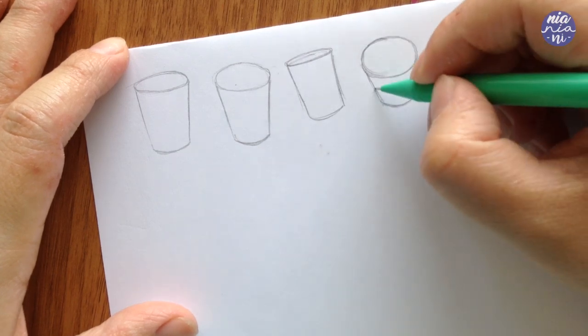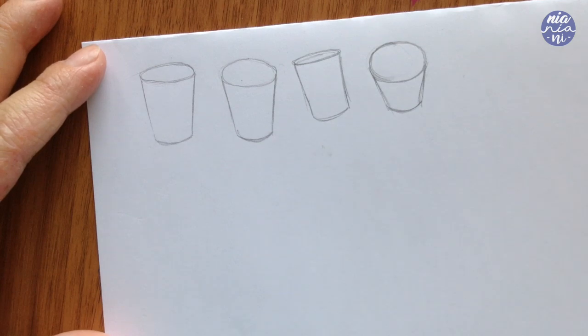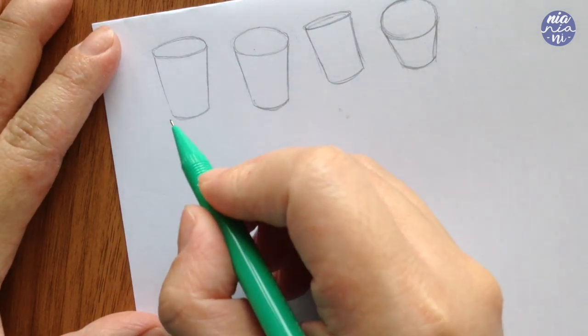And if your oval is looking very round, somewhat close to a circle, that means you're looking at the cup from a high angle. The higher the angle, the more diagonal your lines would be towards the bottom and the shorter the cup will also be.